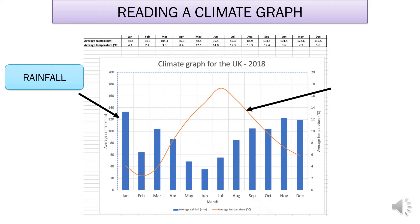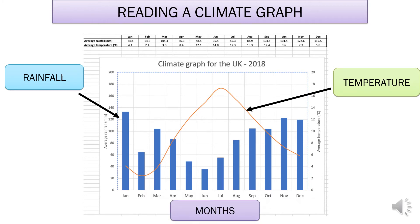The right-hand side axis is showing us the average temperature. We read where the line is at the middle of the bar, then go across to the right-hand side to see what the temperature has been in that month on average. For example, for September I would go to the middle of the bar, across to the right-hand axis, and it would tell me it's been about 13 degrees in the UK in September 2018. Along the bottom, the x-axis tells you which month is which.